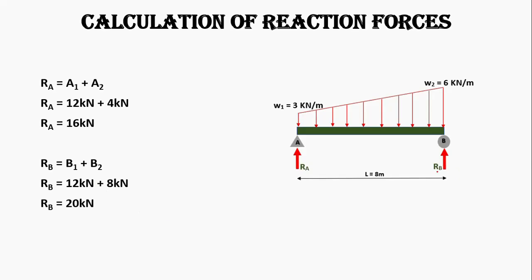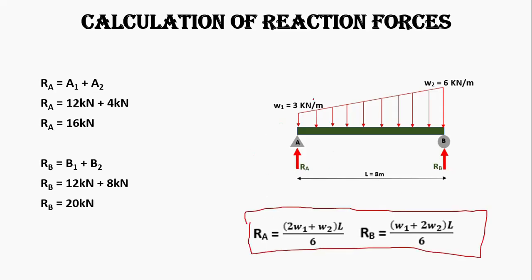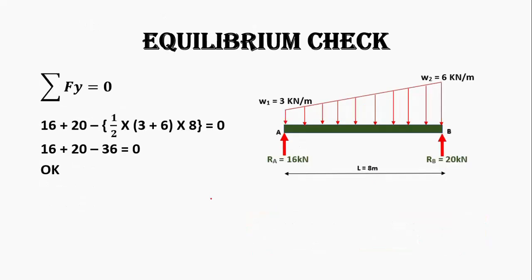You can also use these two formulas to calculate support reactions RA and RB directly, where W1 = 3 kN/m and W2 = 6 kN/m with length 8 meters. Now let's perform an equilibrium check using the condition that the summation of all vertical forces equals zero. Upward forces are positive and downward forces are negative. We have two upward forces: RA = 16 kN and RB = 20 kN, minus the trapezoidal loading.